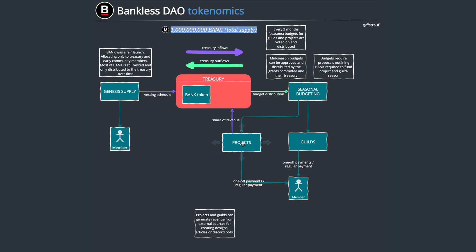Guilds and projects use that budget to pay members. So if you work for Bankless — say you publish an article — you get a certain amount of BANK tokens for that. That's an incentive: when you hold them, you have a say in what happens with the treasury and in the DAO. There are one-off payments for things like a single design job, or regular weekly payments if you take up an ongoing role like a talent coordinator.